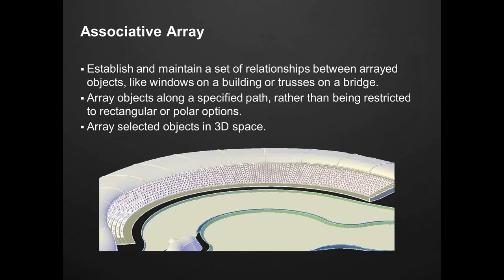The Associative Array allows you to establish and maintain a set of relationships between arrayed objects, such as windows or trusses. You can array objects along a specified path — before you were restricted to just rectangular or polar options, but now you can specify a path to array around. You can also do that in 3D, so if you're in a 3D view or 3D model, you can now array selected objects in that 3D view.